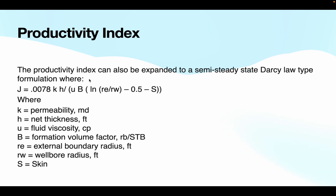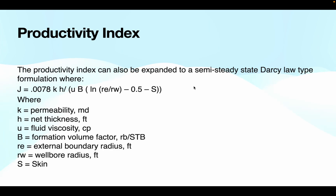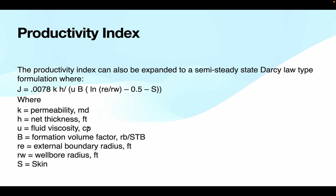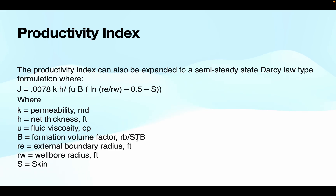The Productivity Index can also be expanded to a semi-steady state Darcy-Law-type formulation. This is the formula. This is permeability — the ability to flow throughout the formation. This is net thickness, this is viscosity, this is formation volume factor — the difference factor of volume in the reservoir — and flow in the tank. This is reservoir radius, this is wellbore radius, and this is skin — the skin between the reservoir and the well.